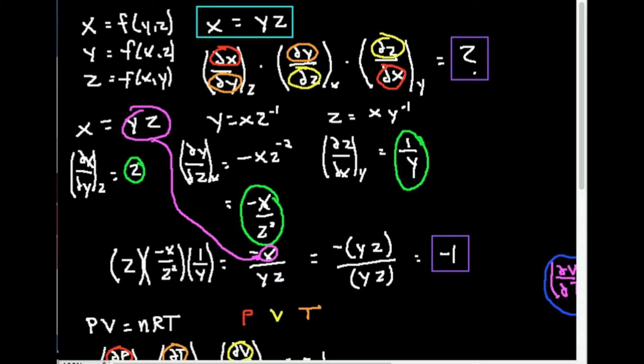Notice x equals yz. I could also divide both sides through by z and get y equals x over z, or x times z to the negative first. I could also divide by y on both sides and get z equals x over y, or x times y to the minus first. I can rearrange this in any way to solve for any of the variables—they're all interrelated such that if I specify two of them, I know the other one. So x is a function of y and z, y is a function of x and z, and z is a function of x and y.